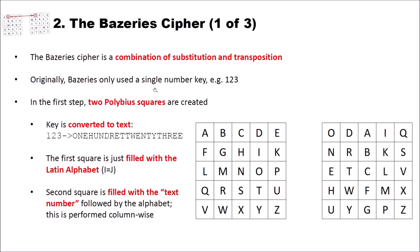How does the cipher actually work? In the first step two Polybius squares are created. You can see these two example Polybius squares here on the right side. And to create these Polybius squares, the number key is converted to text. So this 123 is converted to the text one two three.